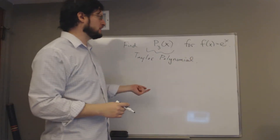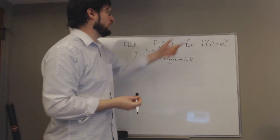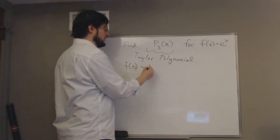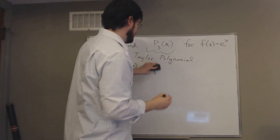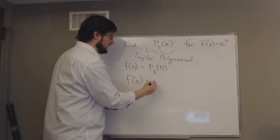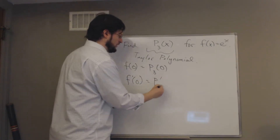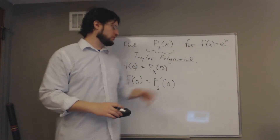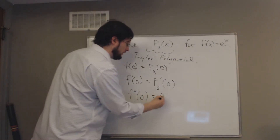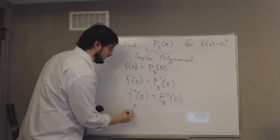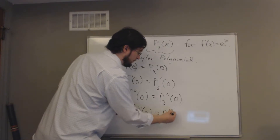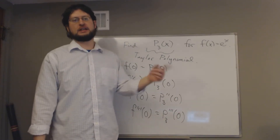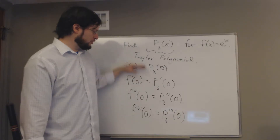Let's extend these ideas to find a third-degree polynomial approximating F(x) = e^x. Let's find P3(x). We require that F(0) equals the polynomial at 0, F'(0) equals the derivative of the polynomial at 0, and similarly for the second and third derivatives. It doesn't make sense to go further because if we have a third-degree polynomial and take four derivatives, we get zero automatically.